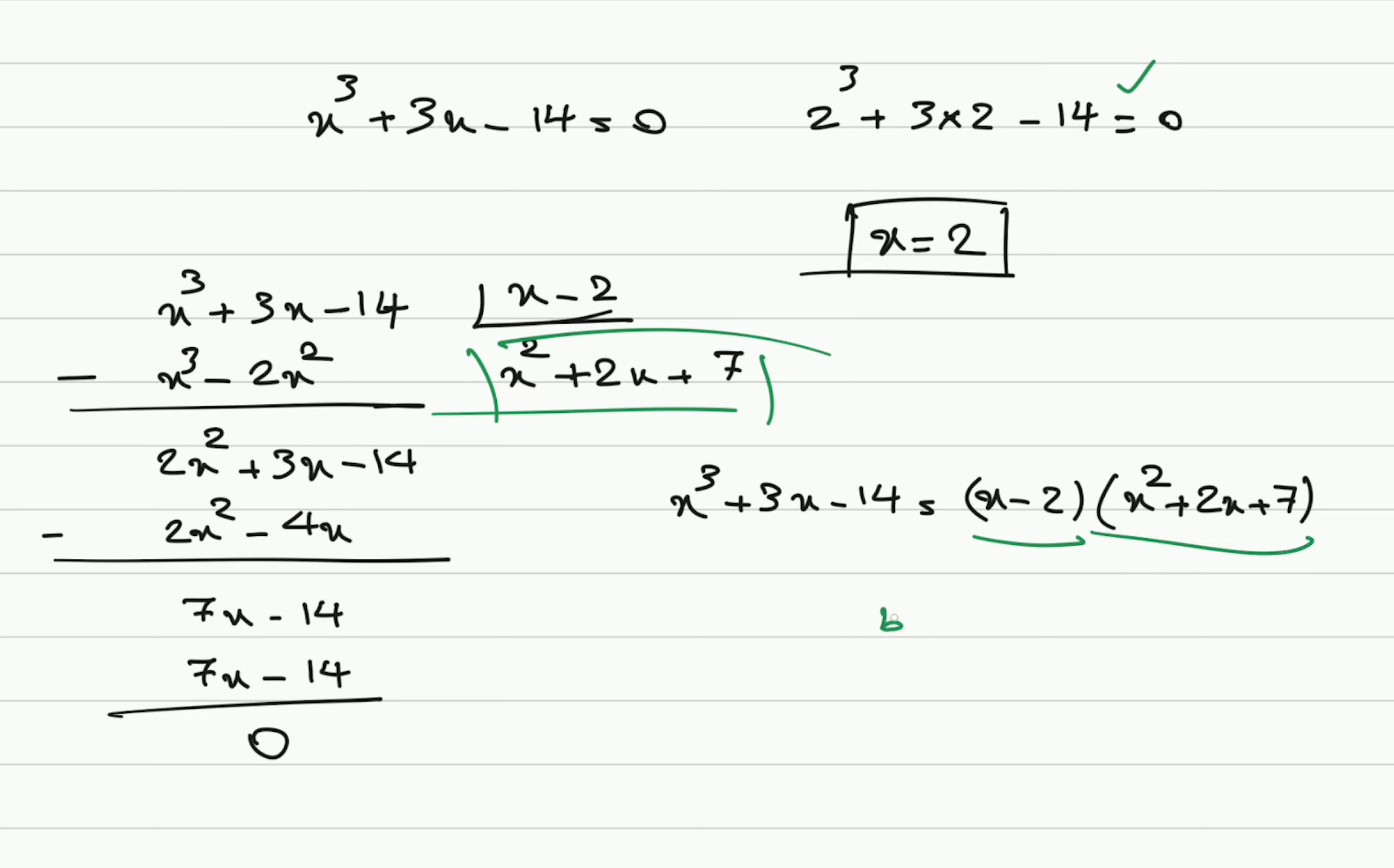And there is no real solution for this one, because b squared minus 4 times a c for this quadratic equation is 4 minus 28. And that's less than 0. That's negative. There is no real solution for this one. And x equals 2 is the only answer.